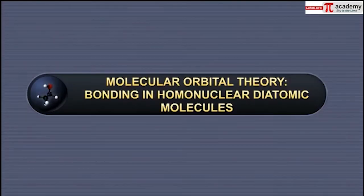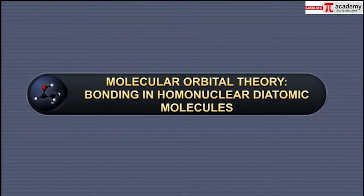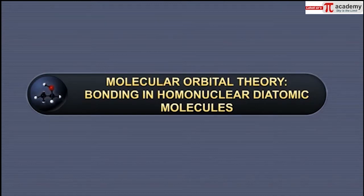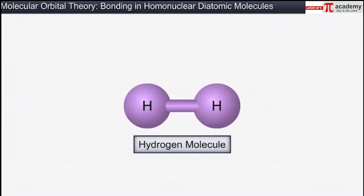In this module, you will learn about bonding in some homonuclear diatomic molecules. Let us start with the hydrogen molecule, which is formed by the combination of two hydrogen atoms.